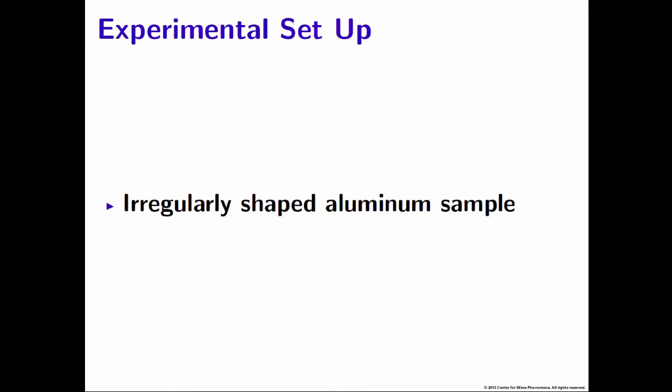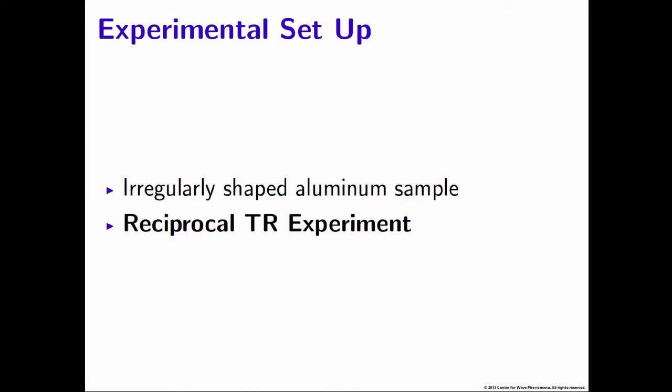We first started with a joint project with Los Alamos National Laboratory. We had an irregularly shaped aluminum sample of approximately 1,000 cubic centimeters. We then did a reciprocal time reversal experiment, where our source was a transducer and our receiver was a laser vibrometer. The downside was that the laser vibrometer cannot be used as both a receiver and source, but the benefit was that we could use it to scan around our source location at the time of focus to look at the spatial focus of both methods.